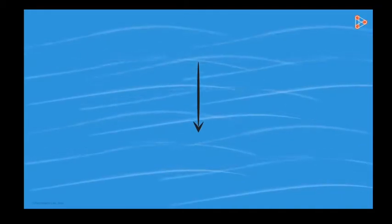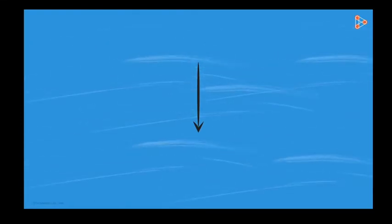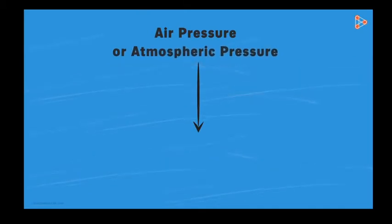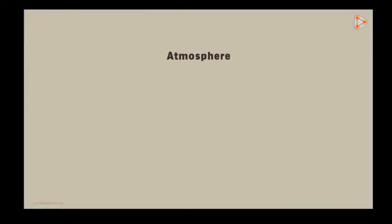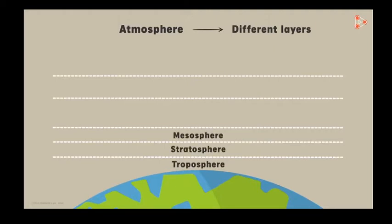Air also behaves in the same way. Just like water, air is also pulled down by the earth's gravitational force, which applies pressure on the air in the downward direction. The pressure exerted by air is called air pressure or atmospheric pressure. The atmosphere is divided into five layers: the troposphere, stratosphere, mesosphere, thermosphere, and exosphere.